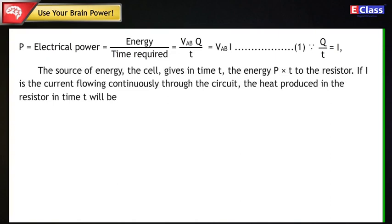If I is the current flowing continuously through the circuit, the heat produced in the resistor in time T will be H = P×T = VAB×I×T (Statement 2).